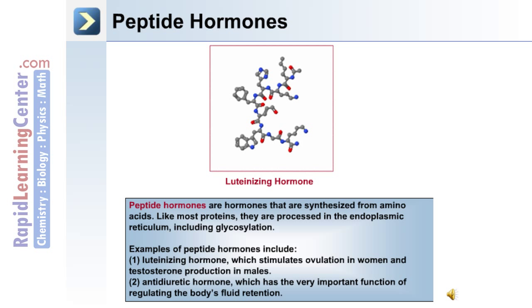Peptide hormones are hormones that are synthesized from amino acids, and like most proteins they are processed in the endoplasmic reticulum, including the process of glycosylation. Examples of peptide hormones include luteinizing hormone, which stimulates ovulation in women and testosterone production in males, and anti-diuretic hormone, which has the very important function of regulating the body's fluid retention.